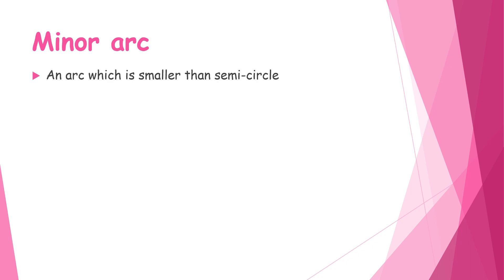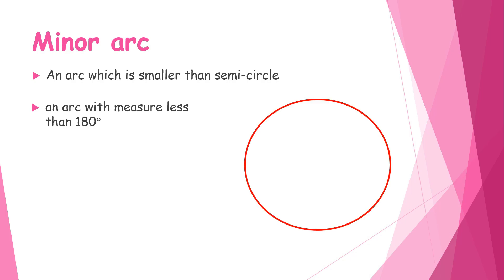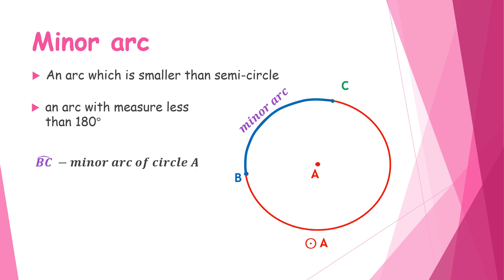A minor arc is an arc smaller than a semicircle — it has a measure less than 180 degrees. On Circle A, if points B and C form an arc that is smaller than a semicircle, that arc measures less than 180 degrees. Therefore, arc BC is a minor arc of Circle A.